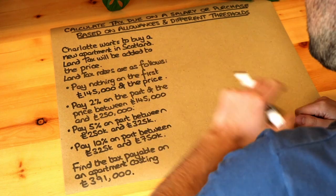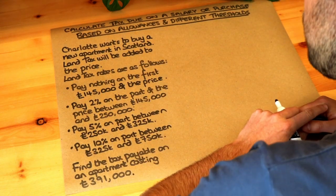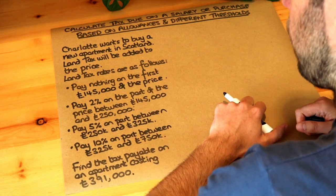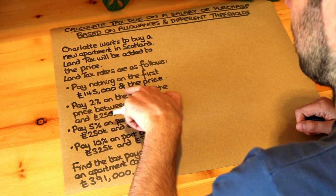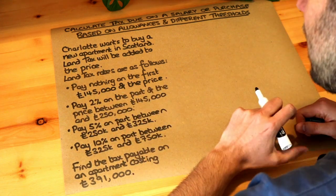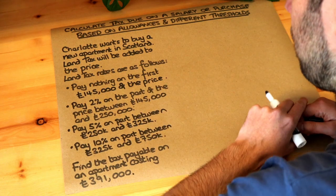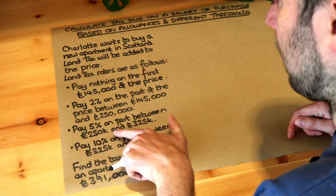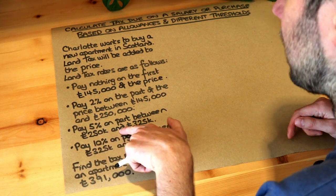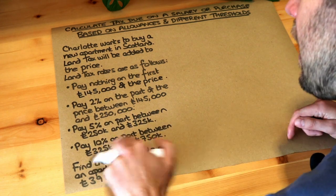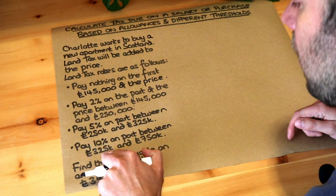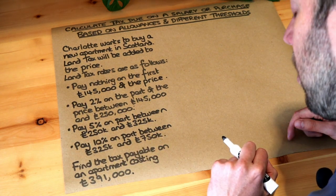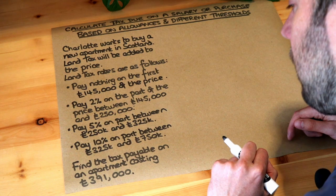Charlotte wants to buy a new apartment in Scotland. Land tax will be added to the price. The land tax rates are as follows: Charlotte pays nothing on the first £145,000. She pays 2% on the part between £145,000 and £250,000. She pays 5% on any part between £250,000 and £325,000, and she pays 10% on the part between £325,000 and £750,000. Find the tax payable on an apartment costing £391,000.